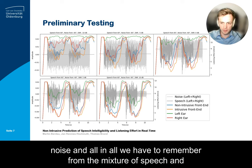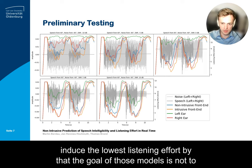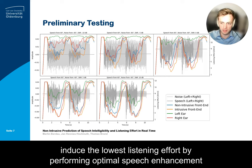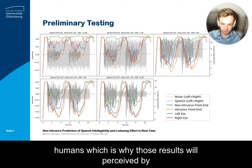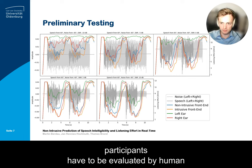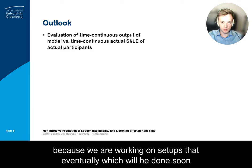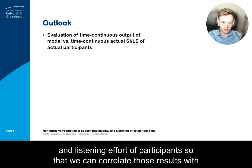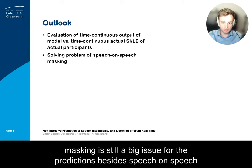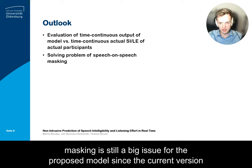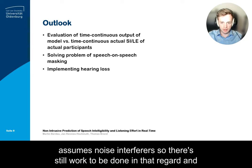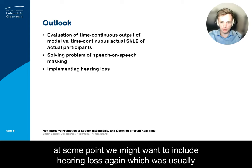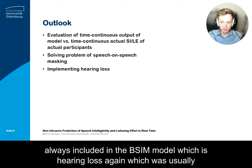The goal of these models is not to induce the lowest listening effort by performing optimal speech enhancement, but rather to model listening effort as perceived by humans — which is why the results will have to be evaluated by human participants. This will be done soon, as we are working on setups to track speech intelligibility and listening effort of participants so that we can correlate those results with model predictions. Additionally, speech-on-speech masking is still a big issue for the proposed model, since the current version assumes noise interferers, so there is still work to be done. At some point we may also want to include hearing loss, which was usually included in the BISIM model used as the front end.